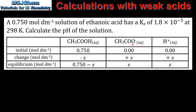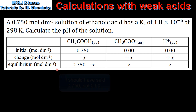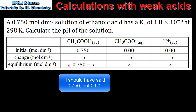The initial concentration of the ethanoate ion and the hydronium ion are both zero. The change in concentration for the ethanoic acid will be negative X, and the change in concentration for the ethanoate ion and the hydronium ion will be plus X. The equilibrium concentration of the ethanoic acid is 0.750 minus X, and X for both the ethanoate ion and the hydronium ion.